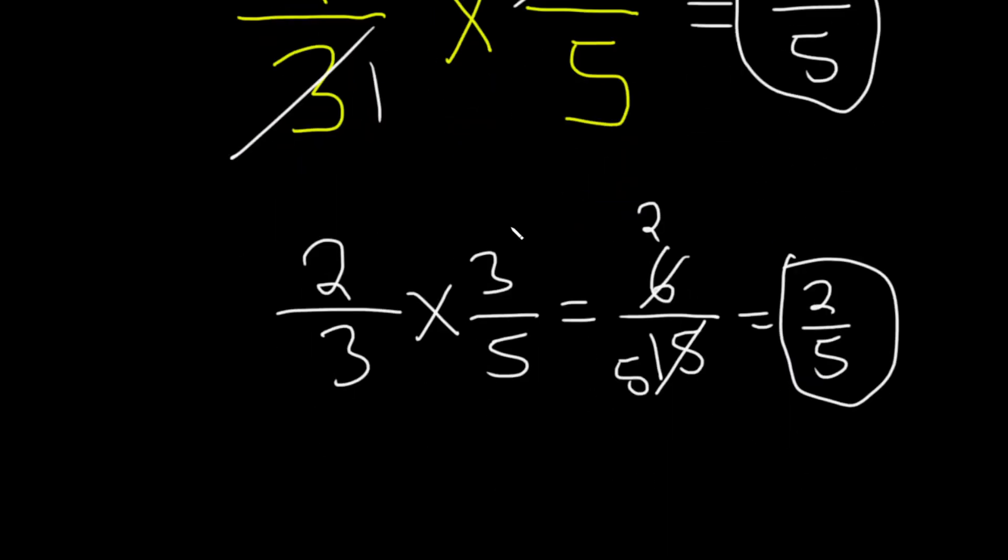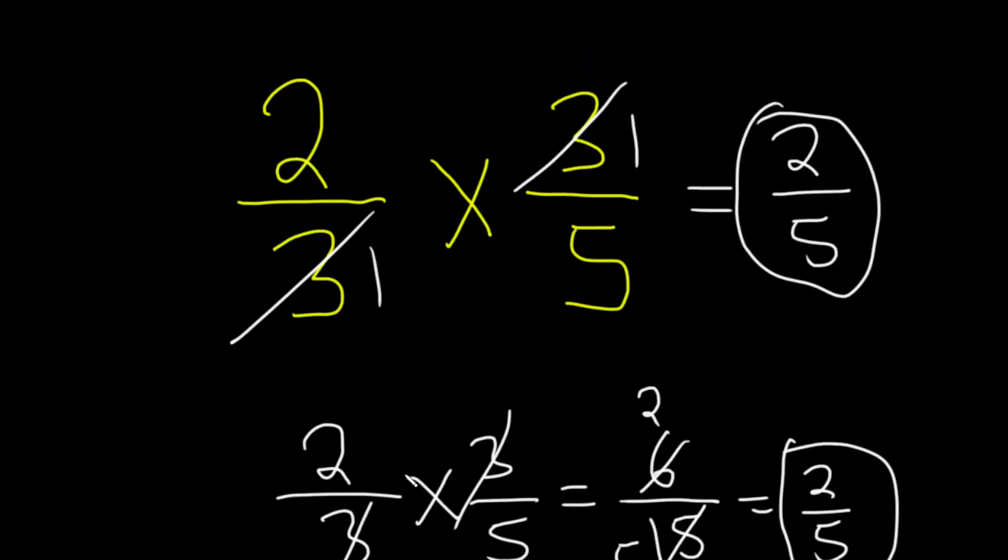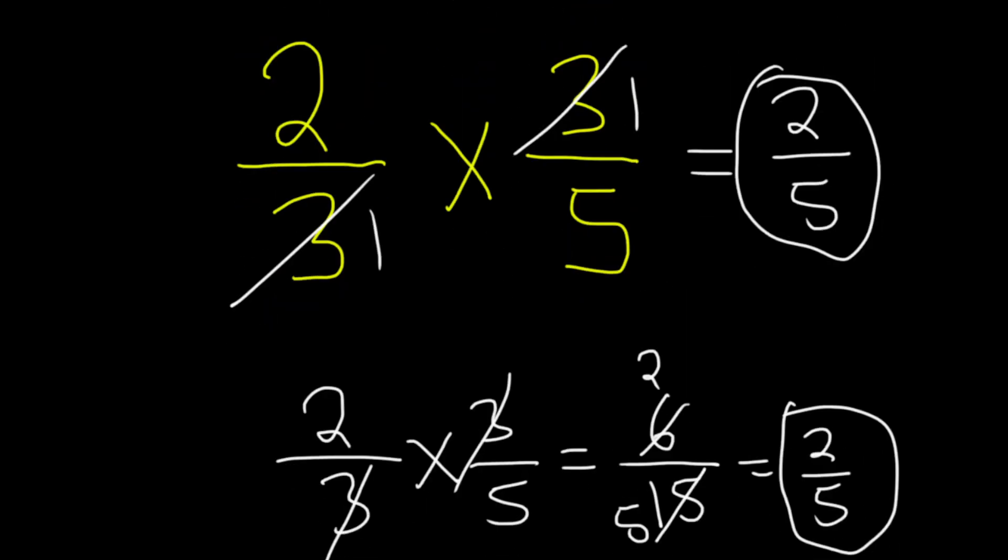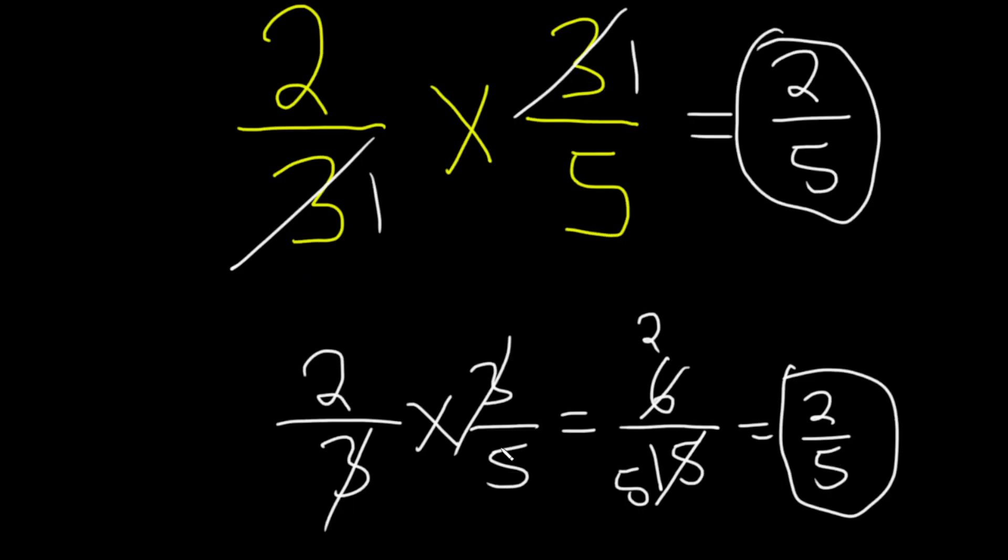You can basically see, 2 over 5. Super simple, right? So a couple of different ways to do it. Hopefully this has been helpful and you've learned some mathematics through this example. Good luck.